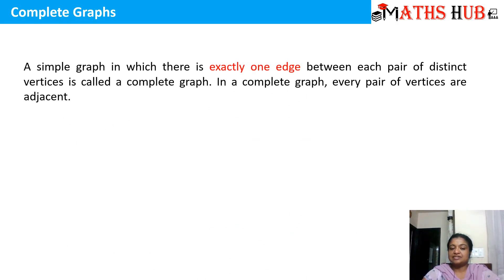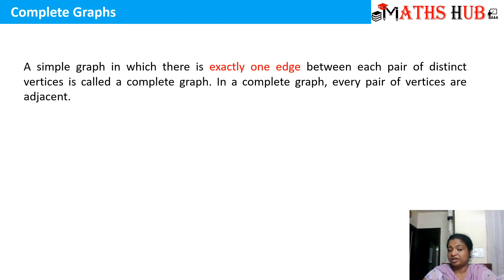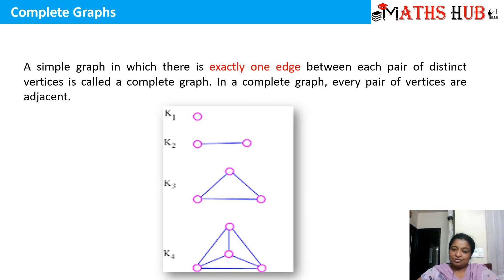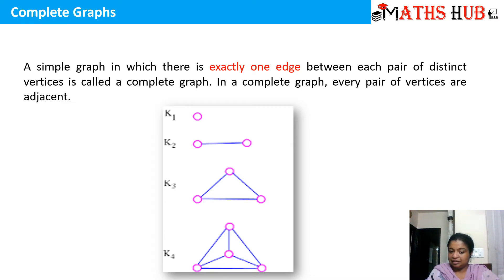Now let's come to the definition of a complete graph. A complete graph is a simple graph in which there is exactly one edge between each pair of distinct vertices. Every pair of vertices is adjacent. Here are some examples: K1 is a complete graph with one vertex, K2 with two vertices — exactly one edge between the vertices. K3 is a complete graph with three vertices; pick any two vertices and they are adjacent with exactly one edge.